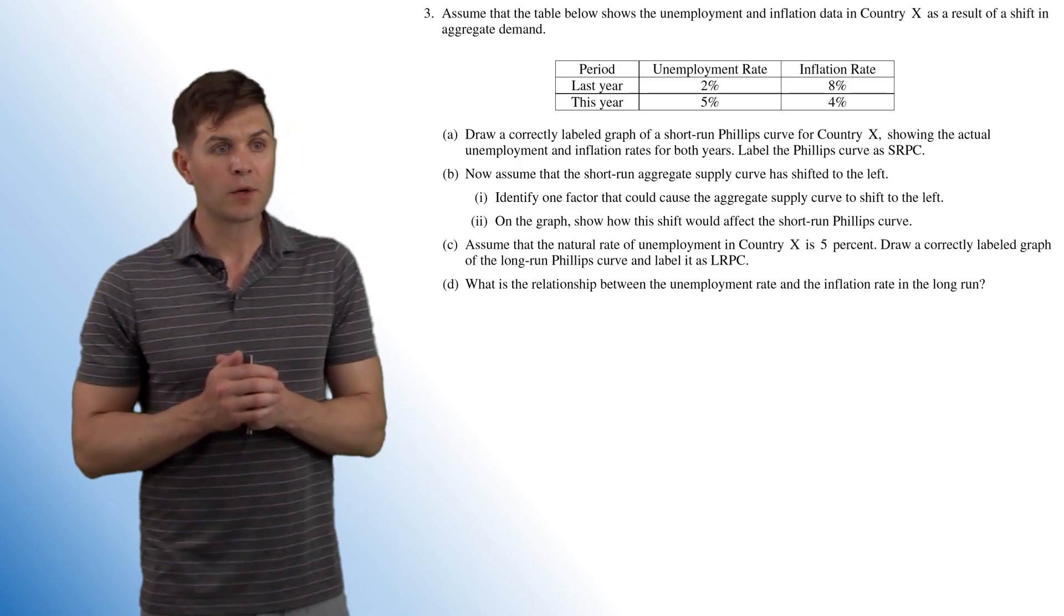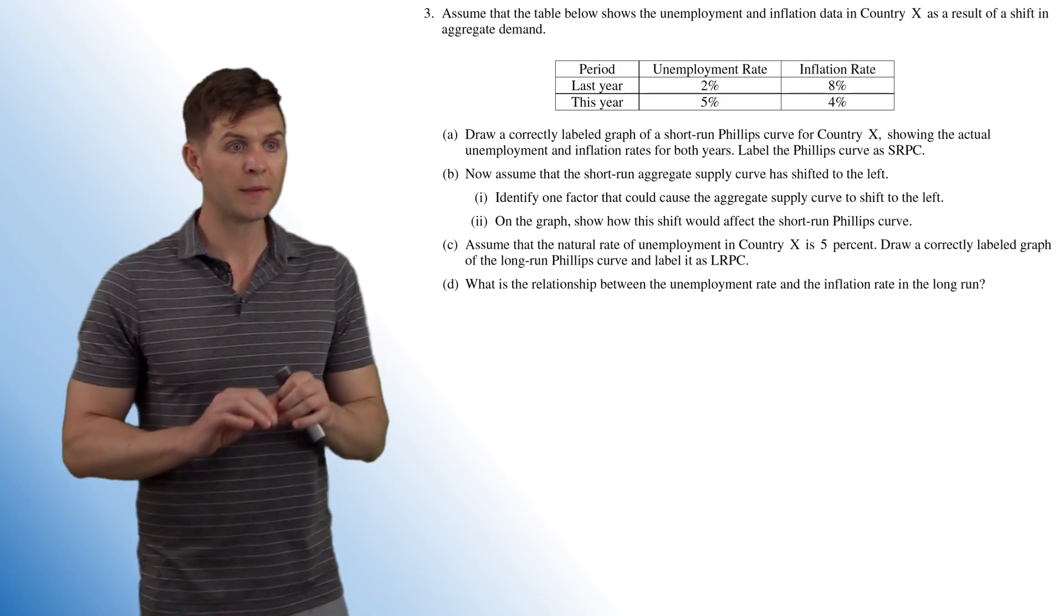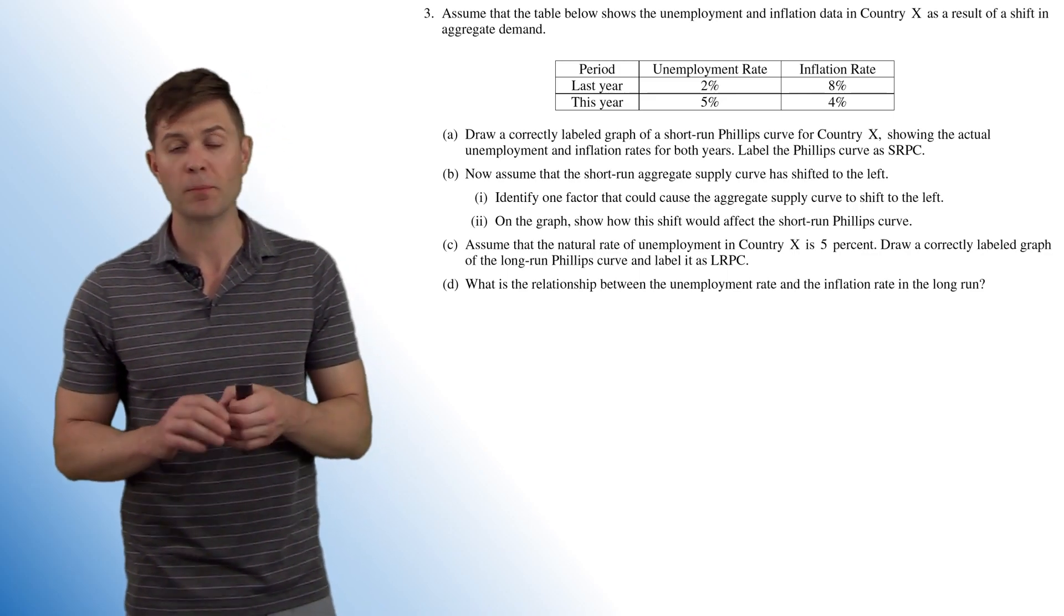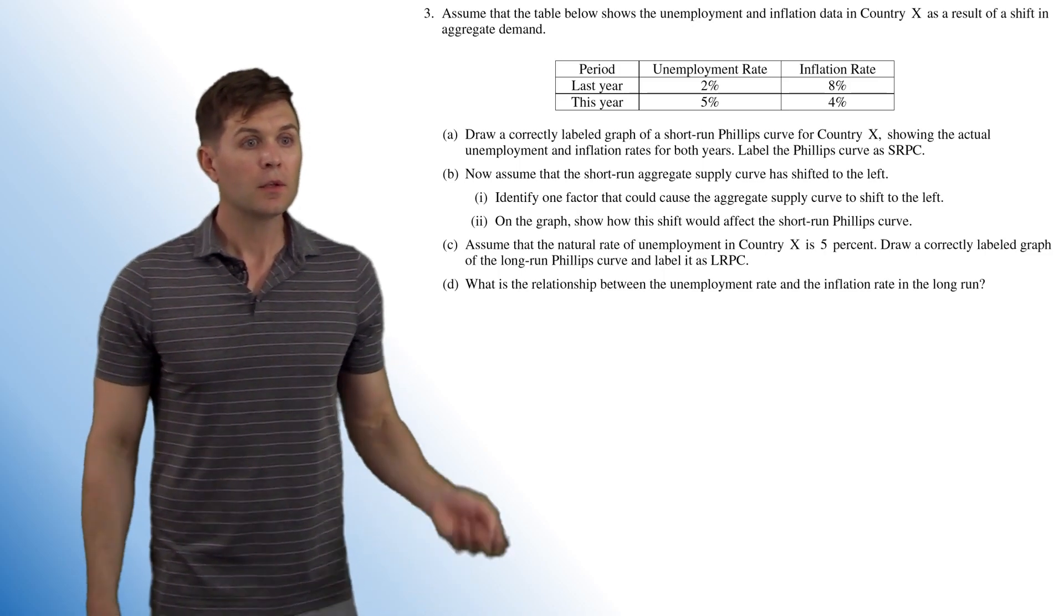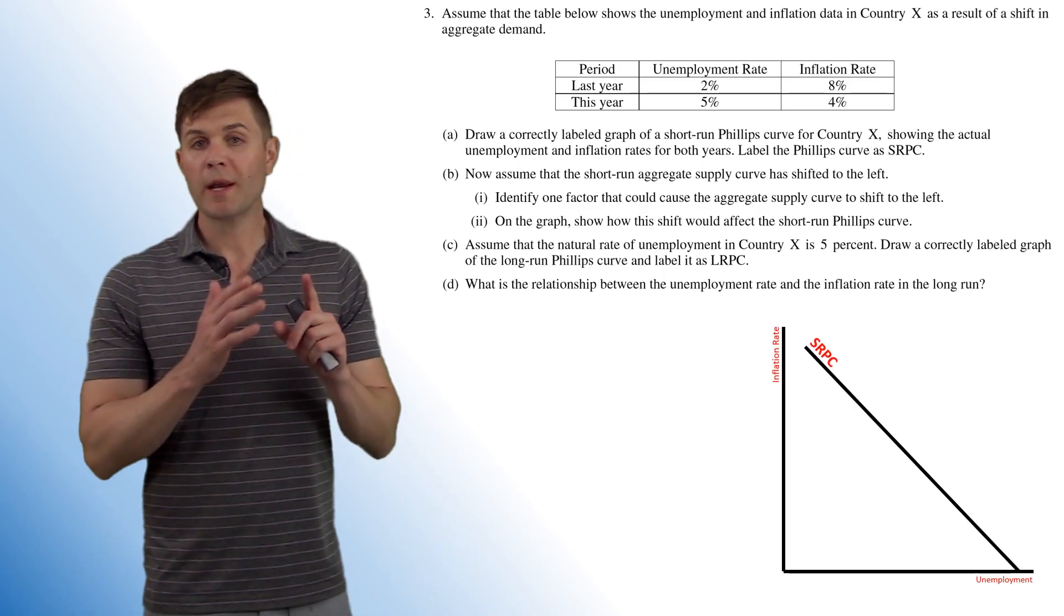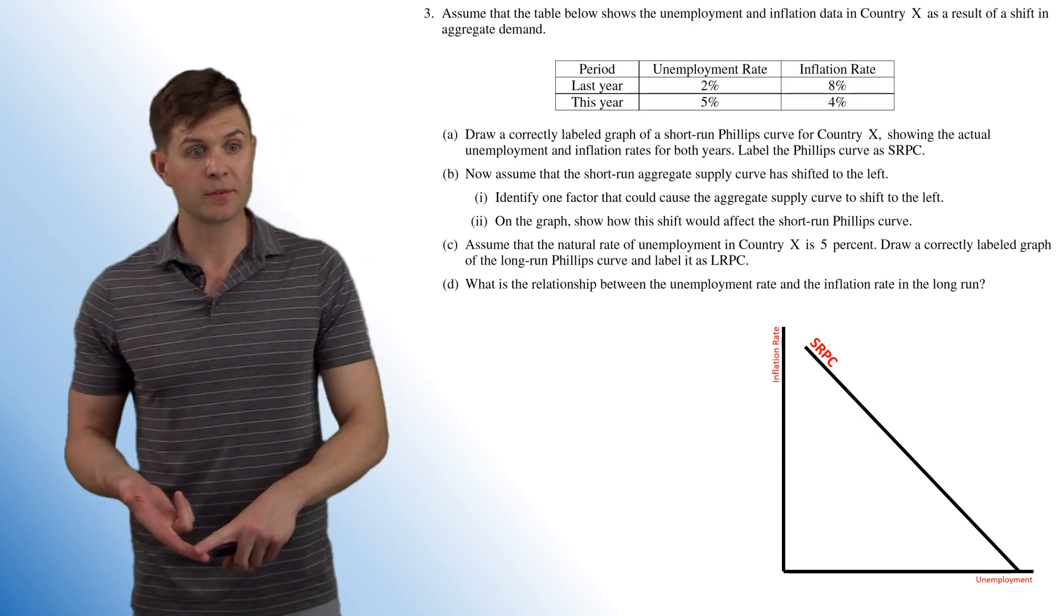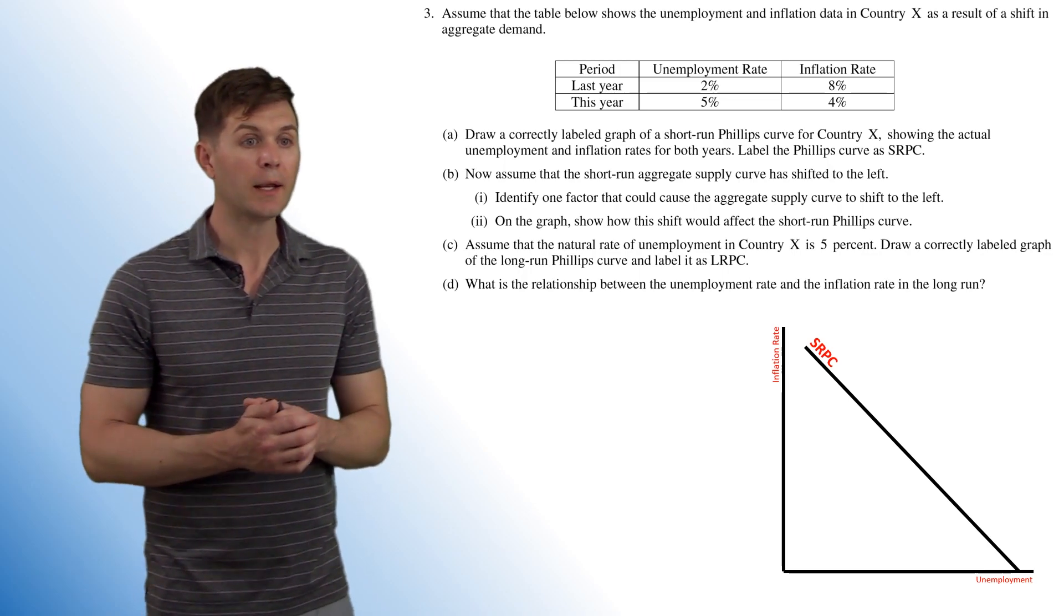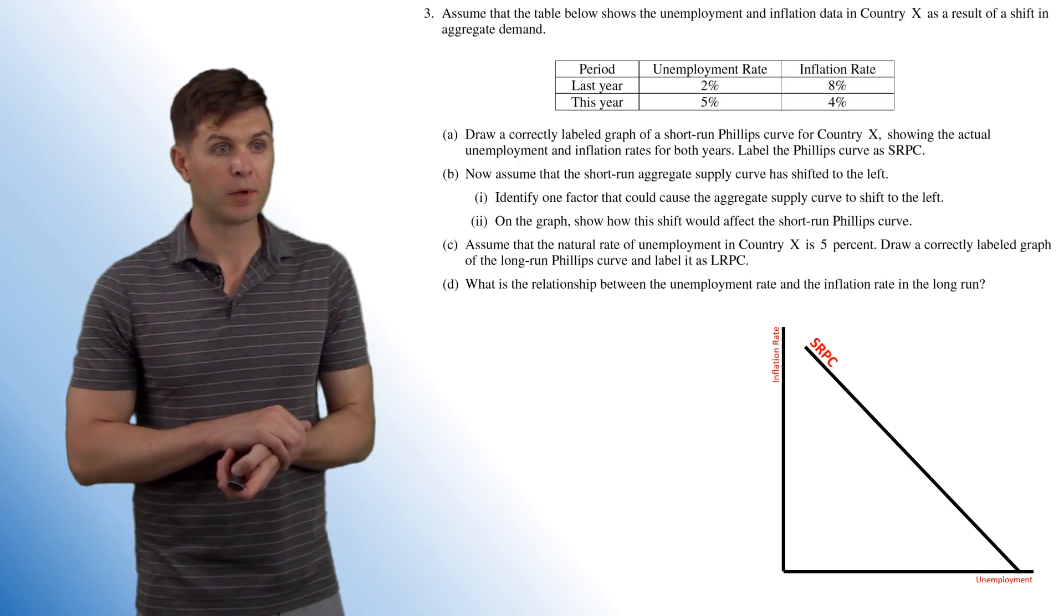So it starts off, draw a correctly labeled graph of the short run Phillips curve for Country X, showing the actual unemployment and inflation rates for both years, label the Phillips curve SRPC. So we want to draw this out, make sure you got your axes labeled properly. The vertical is inflation rate, the horizontal is unemployment rate, you gotta have those labeled right. And then we have our downward sloping short run Phillips curve, make sure you got a label on that one as well.